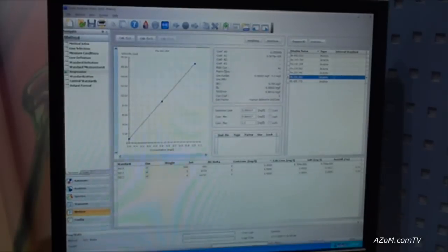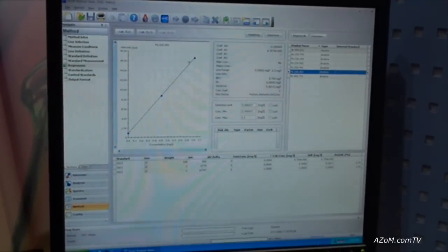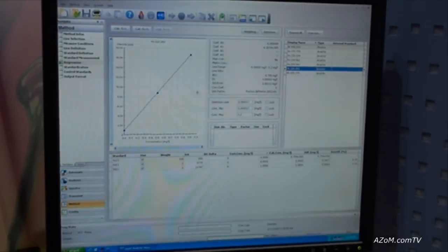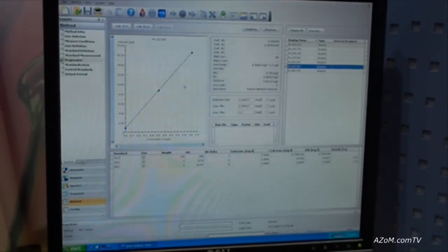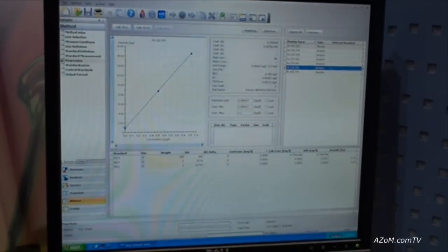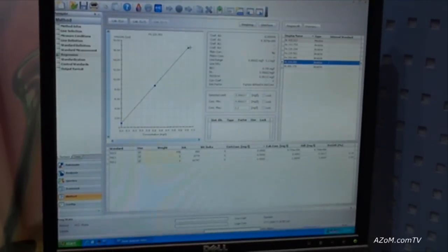So we jump down to regression, and what we see here is a lead calibration curve in oil. Again, at the specific concentration limits of the standards, a blank, a mid-level standard, and a high-level standard.